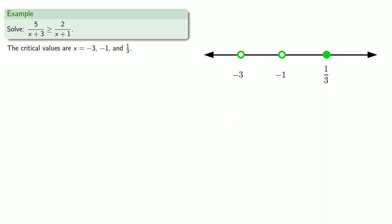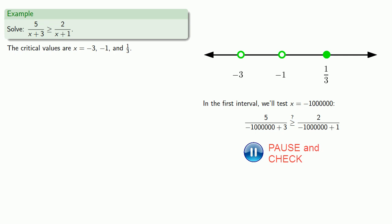In the first interval, we'll test negative 1 million, and we find this inequality is false, so we exclude the interval.